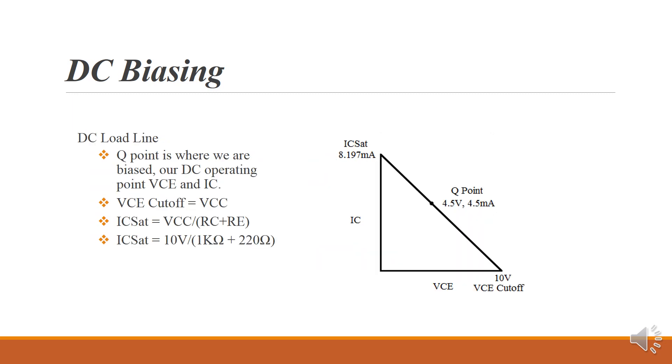This is our DC load line. And here you can see that we're comparing IC, or collector current, to VCE, voltage, collector to emitter. At our two extremes, we've got IC sat and VCE cutoff. At IC sat, you can see we're at our max current, where VCE is at its minimum, zero volts. And at cutoff, we're at our max voltage, VCE, but our minimum, or zero, IC.